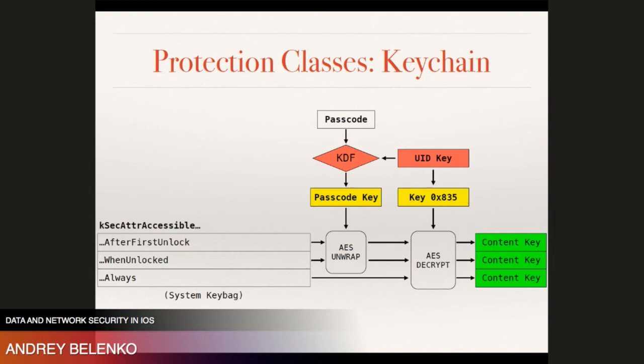Key derivation for keychain is very similar to files. The key difference is that the security attribute accessible always class is not encrypted with the passcode key — this is why it is available at all times. Everything else is encrypted with both the passcode and the device key, so without the passcode you cannot decrypt those items.